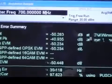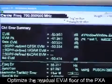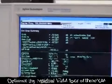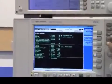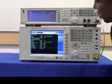The next step is to optimize the input range, so we can optimize the residual EVM floor of the PXA. I do that by going to the Amplitude key, and you see a soft key labeled Range.